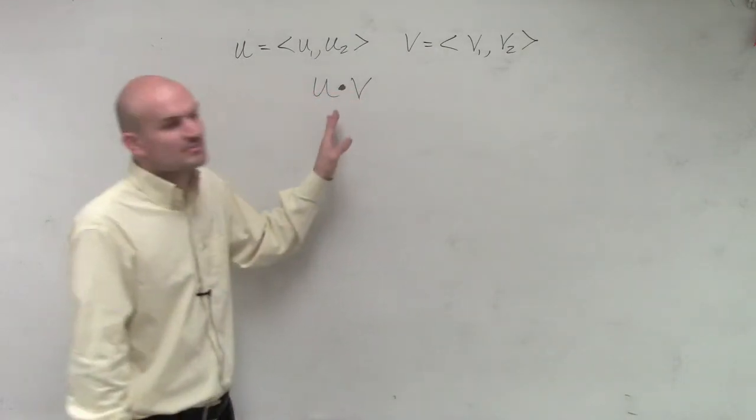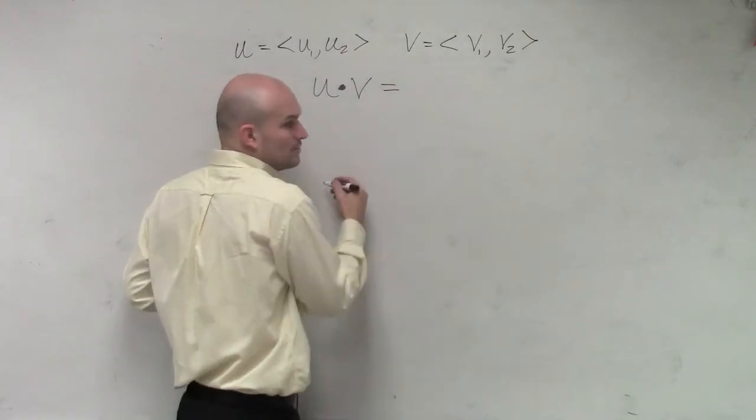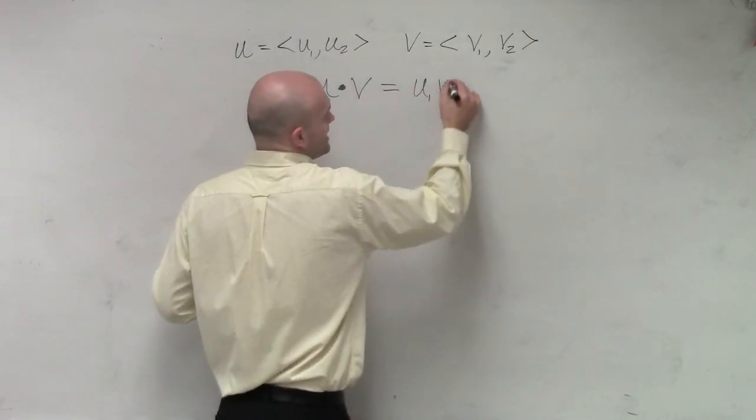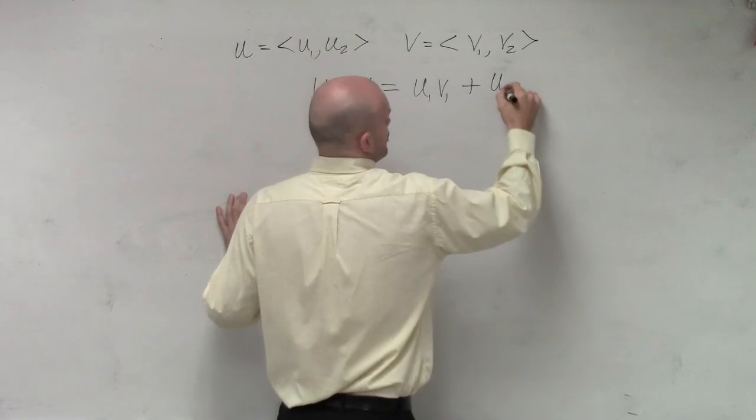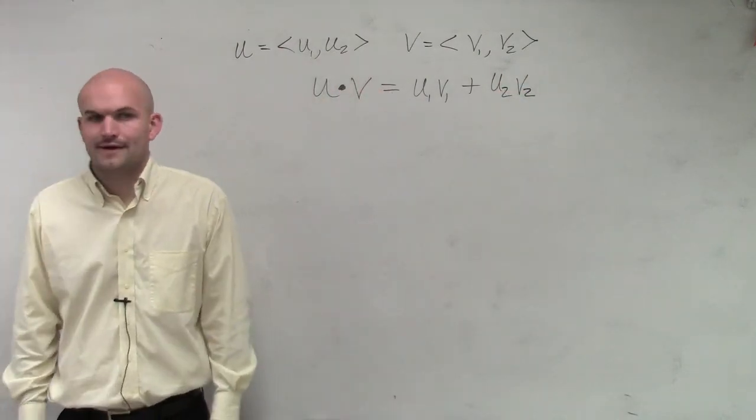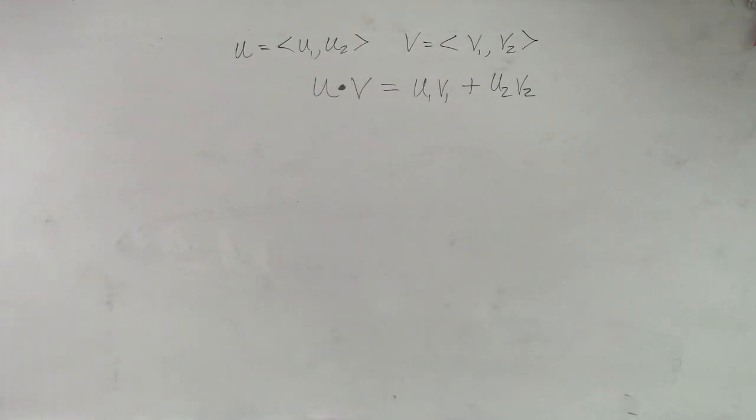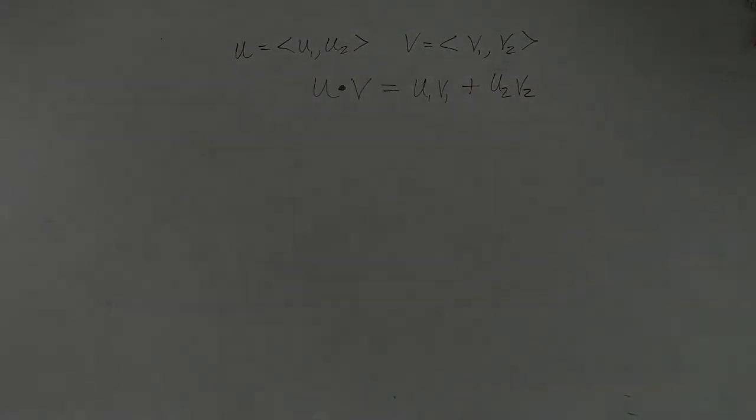What the dot product says is, if I'm going to say the dot product of u and v, that is going to equal u1 times v1 plus u2 times v2. So let's go through an example. How does that sound?